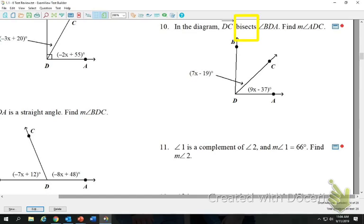Bisects means that they're equal. They're congruent. So that means that this angle is equal to this angle. So that's when you would set them equal. That's the only time you set them equal is when it says the word bisects. Are there any others? That was a good question.